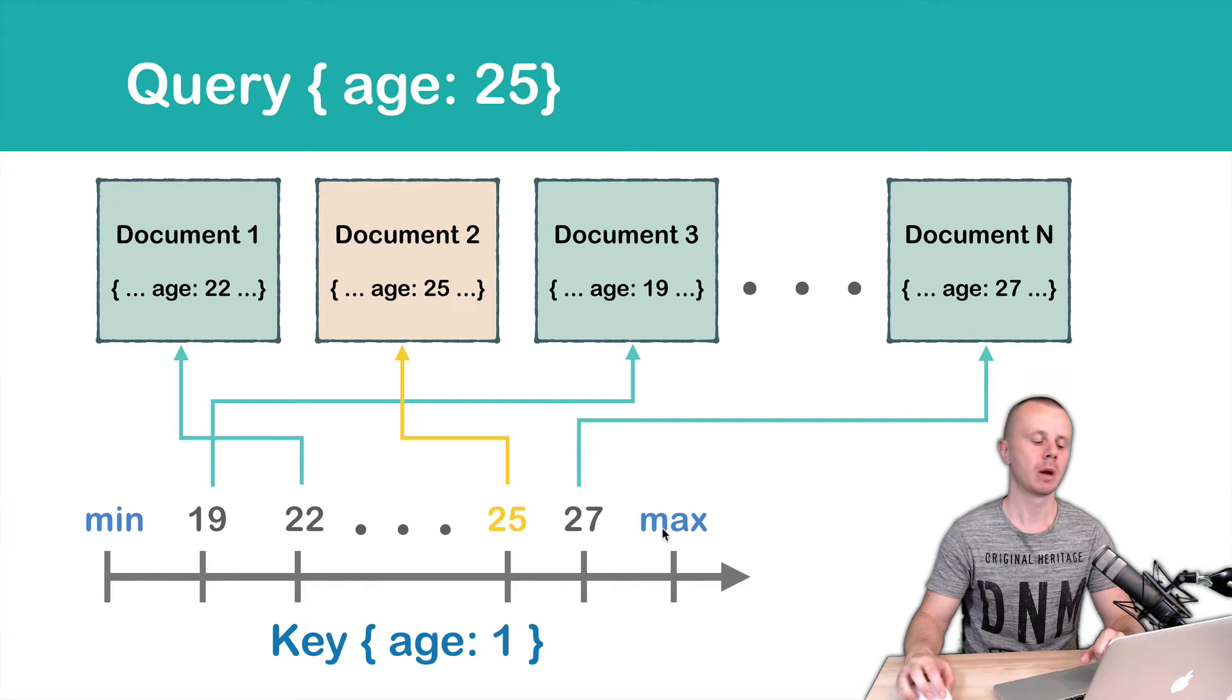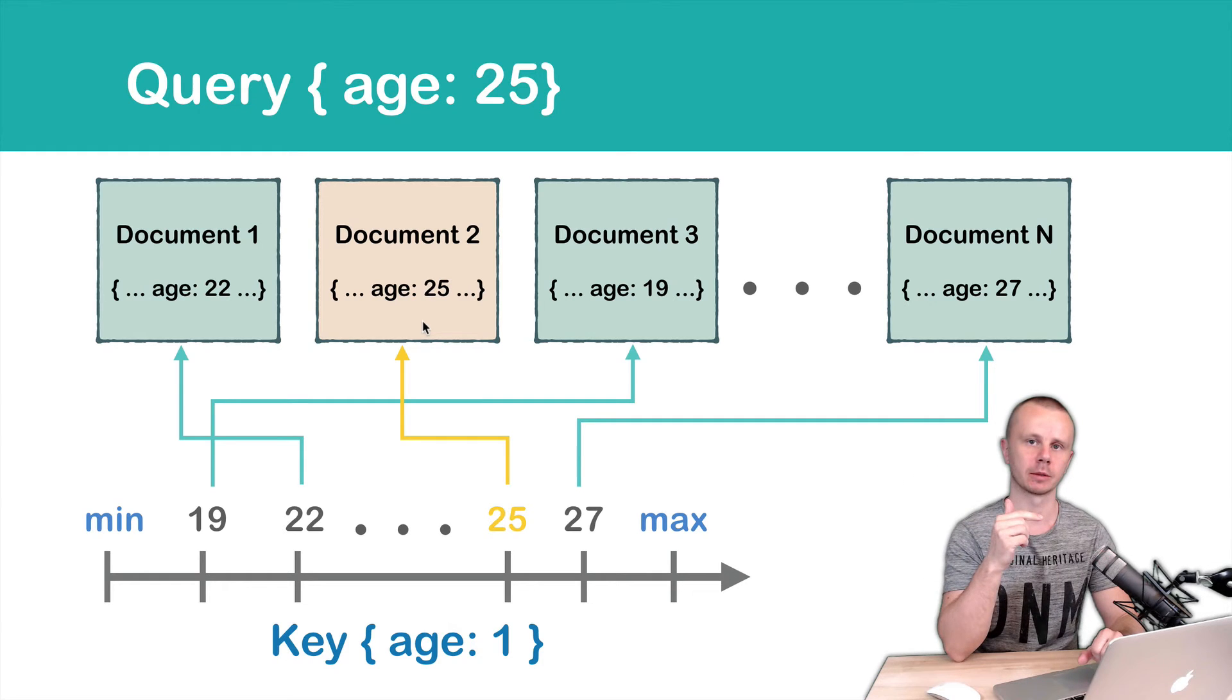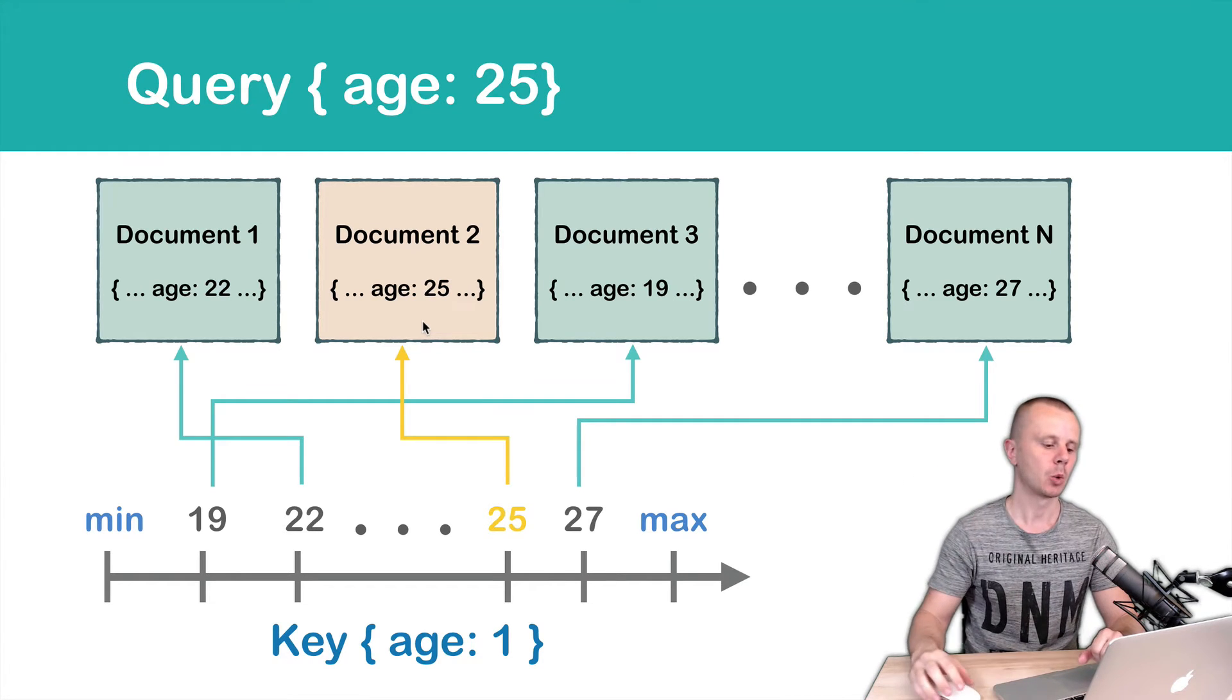MongoDB performs a search in the index, and when the value is found—in our case it is here, 25—we immediately get a pointer to the document, retrieve this document, and send it back to the client. So again, we scan only the index.